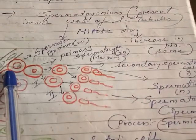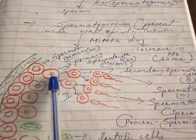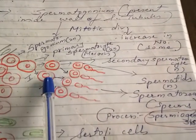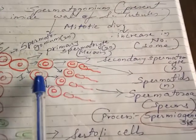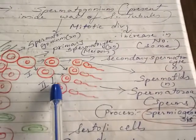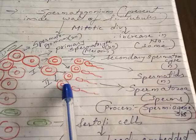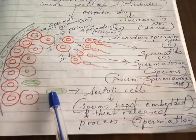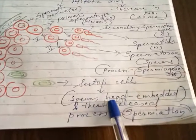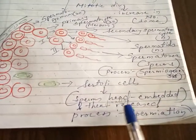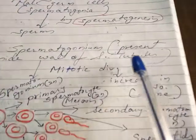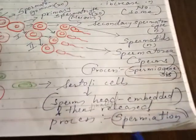So, spermatogonia undergo mitotic division giving rise to primary spermatocyte. Primary spermatocyte undergoes meiotic division giving rise to 2 secondary spermatocytes, which are haploid. These undergo second meiotic division giving rise to 4 spermatids, which transform into spermatozoa through spermiogenesis. In between, the Sertoli cells are present; the sperm's head gets embedded into the Sertoli cell and is then released — that process is called spermiation. So three processes are: spermatogenesis, spermiogenesis, and spermiation.